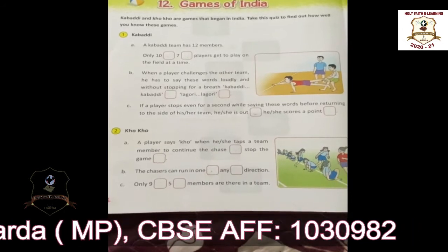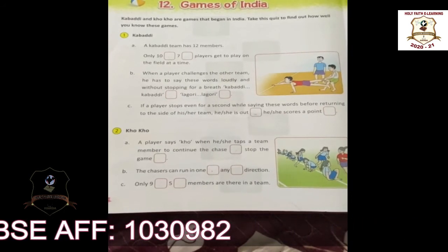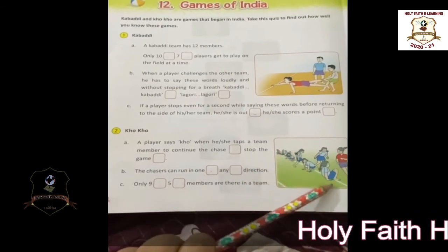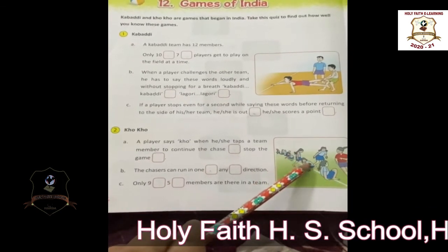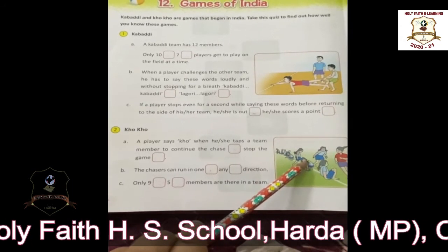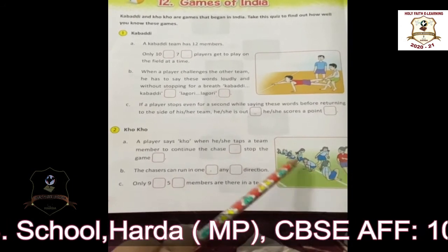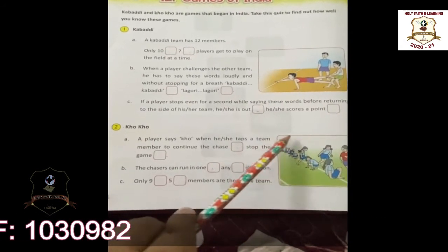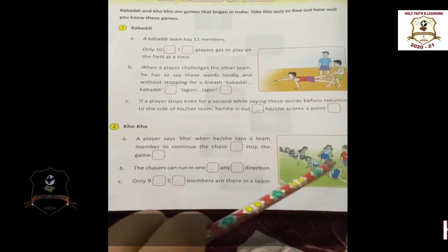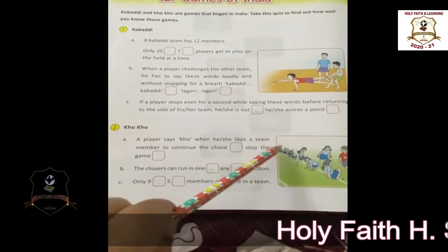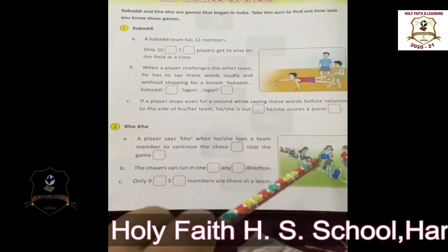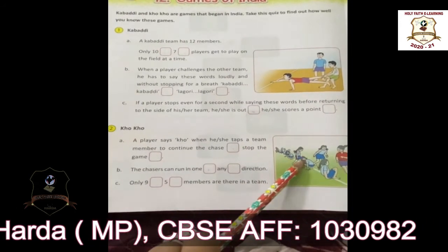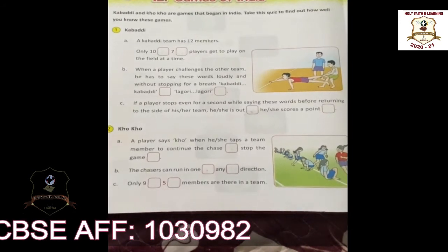The player says 'ko' when he or she taps a team member to continue the chase. If she has to continue the chase, she has to tap a team member and say 'ko'. The chasers can run only in one direction. I hope you understood about Kho Kho.